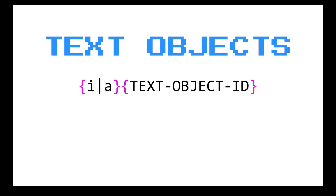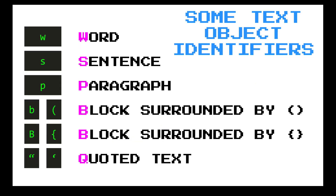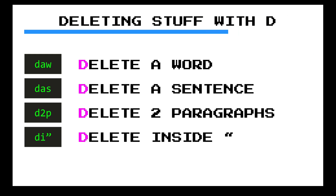How do you create a text object? You use the combination of a particle — either I or A — and then you use what I'll call a text object ID, something that represents a text object. I stands for 'inner' and A stands for 'around'. When you combine those particles with a text object ID — word, sentence, paragraph, block, surrounded by quotes, etc. — different things happen.